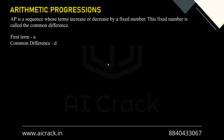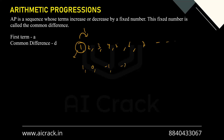An AP is a sequence whose terms increase or decrease by a fixed number. This fixed number is called the common difference. The first term is 'a' and common difference is 'd'. This common difference can be positive, negative, or zero. For example, with d = 1: 1, 2, 3, 4, 5, 6, 7 and so on — here a = 1 and d = 1. Another case: 1, 0, -1, -2, -3, -4 and so on — here d = -1, a decreasing AP.